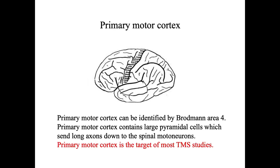Now we come to the next question: how can we do motor cortical stimulation with TMS? This slide shows the primary motor cortex. The primary motor cortex is identified by Brodmann Area 4. It contains very large pyramidal cells, which are the corticospinal neurons. These neurons send very long axons down to the spinal cord and synapse with the spinal motor neuron pool. Importantly, the primary motor cortex is a target for many TMS studies.